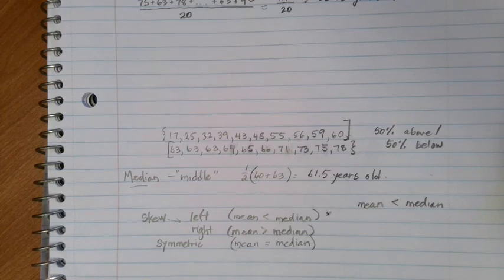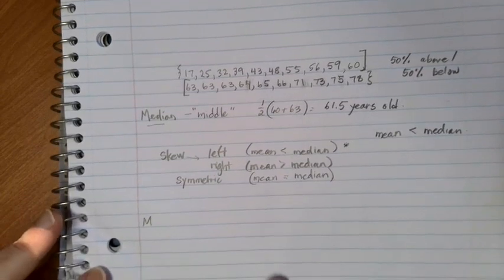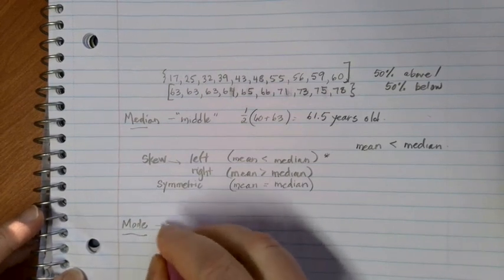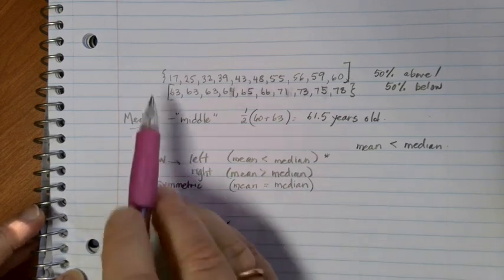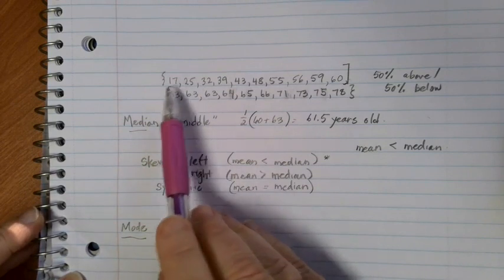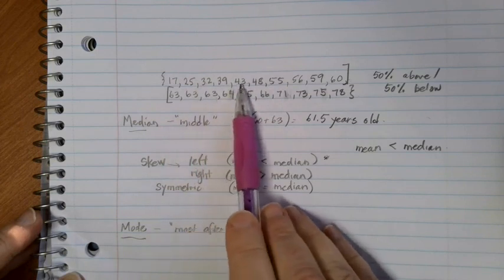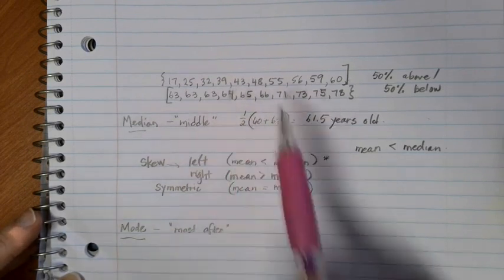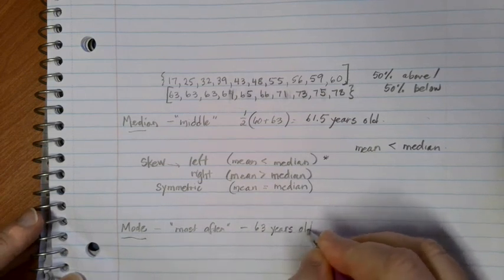Another piece of information or way that we can talk about the central data point is called the mode. The mode is a value that occurs the most often in our list. So if we were to look at our list here, the ordered list makes it easy to find. Notice as we go through here all of these ages are different, but as we come down here we have three people that were 63 years old. And so the mode is going to be 63 years old. This is just the age that shows up the most often in the list.